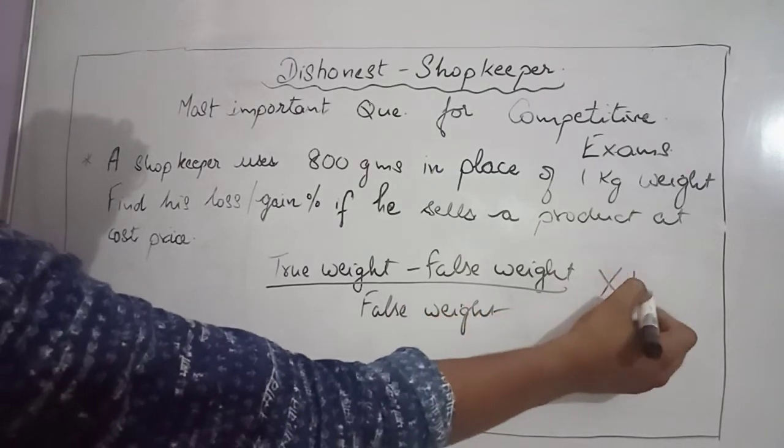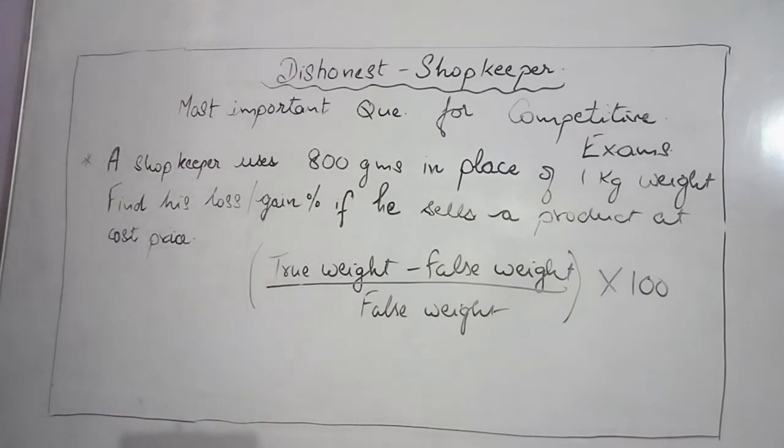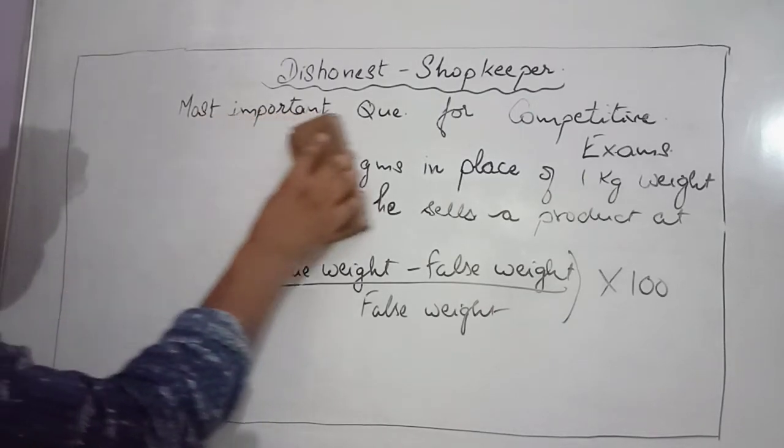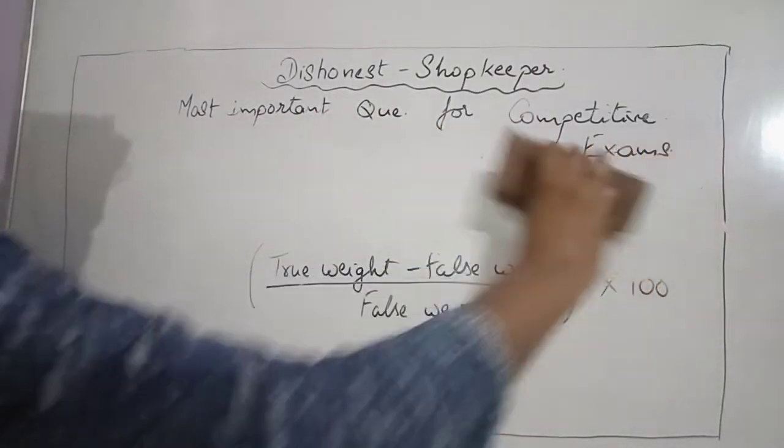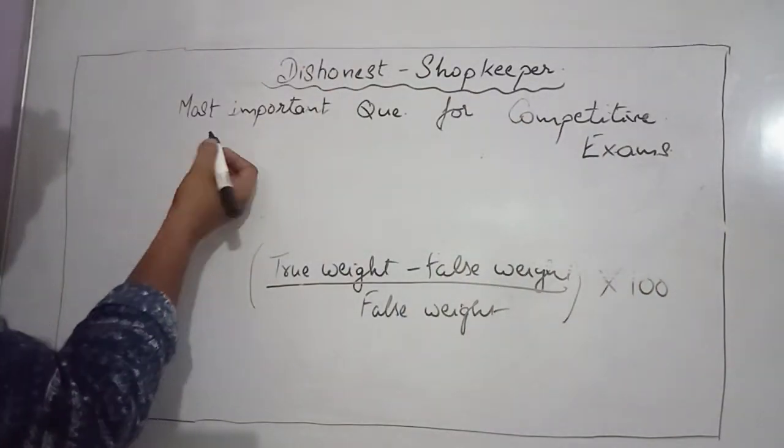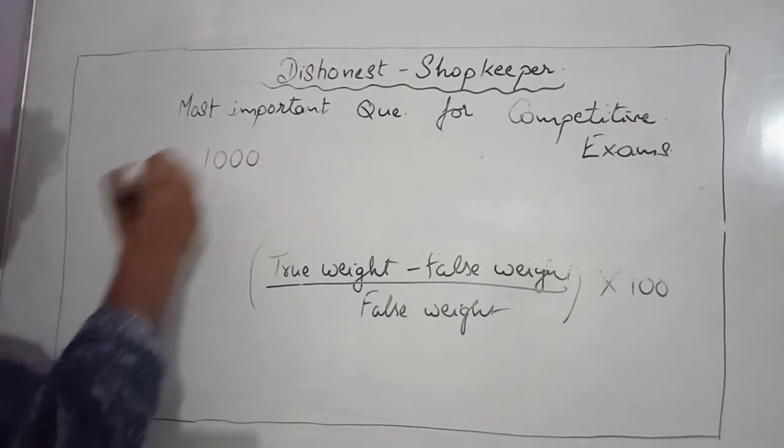Multiply by 100. This is the formula. For example, the true weight given is 1000 grams, which is one kilogram converted to 1000 grams.